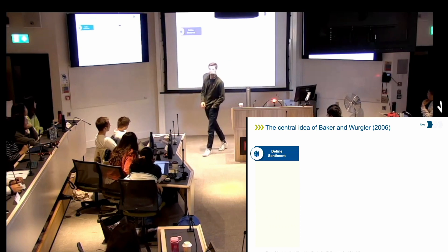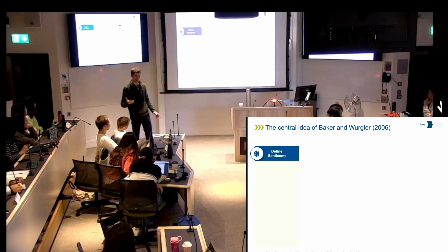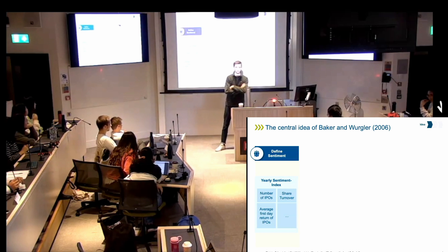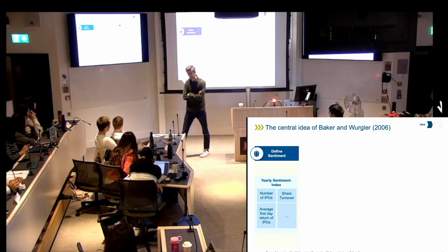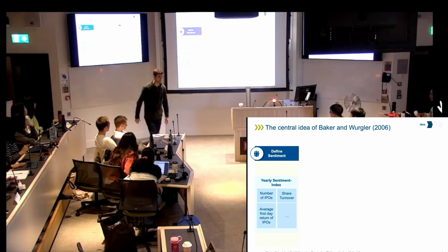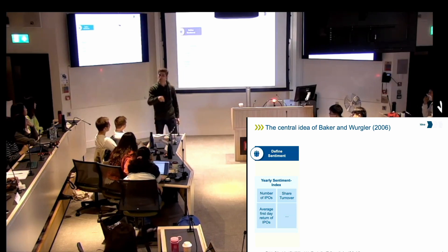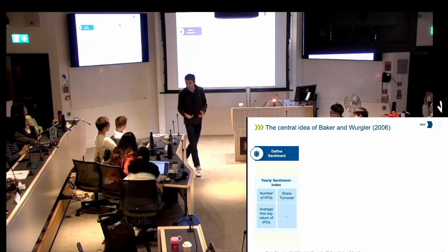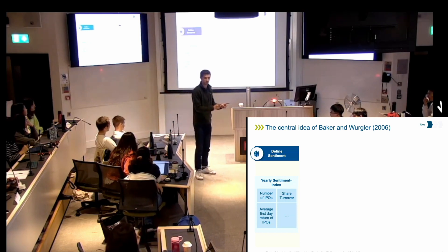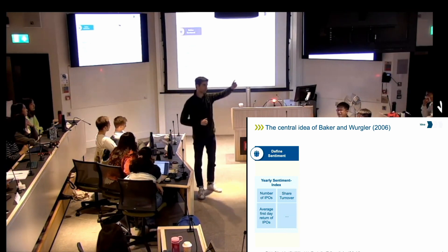So what do we need to do? We first need to understand what sentiment is — how do I measure how people feel? This seems like a very difficult question, but they actually take a very simple approach. They just say, let's try to find an index which tells us how people feel. And this index is basically just an average of different numbers you can observe.